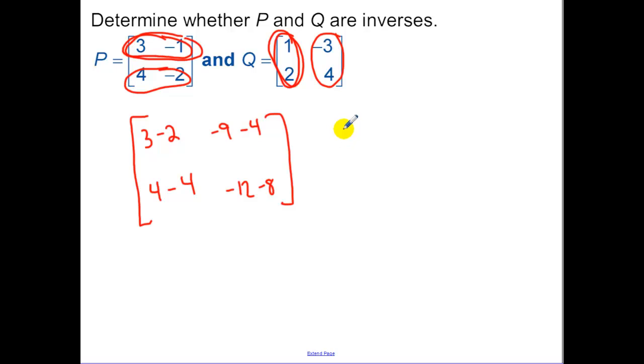Simplifying that, we have 1, negative 13, 0, and negative 20. No, they are not inverses because we don't get the identity matrix out.